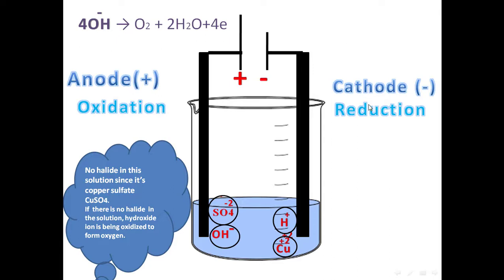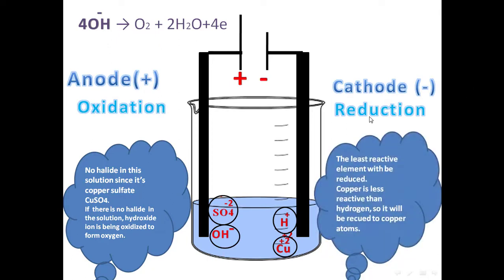What about cathode? According to the rule, cathode has a reduction of element, or ion, that has less reactivity. So here, copper is less reactive than hydrogen, so copper will be reduced.